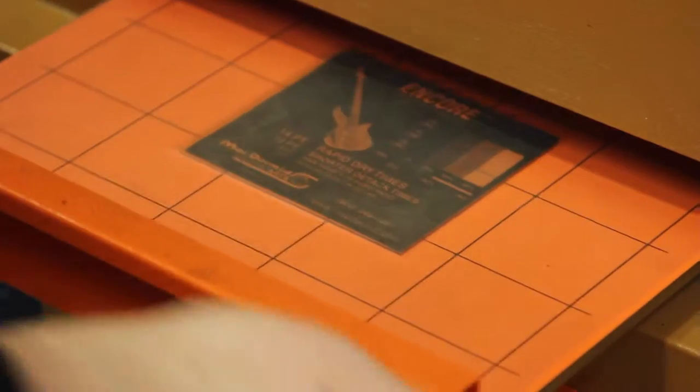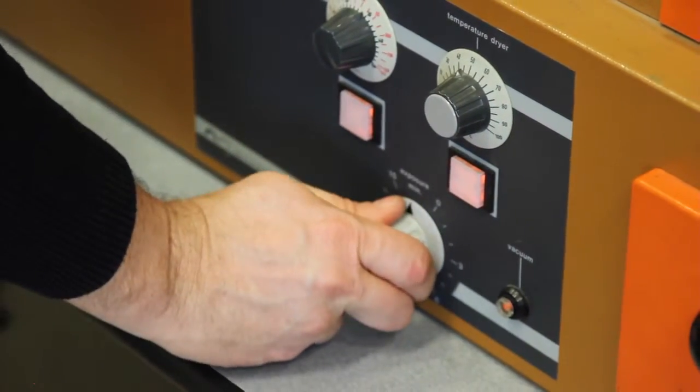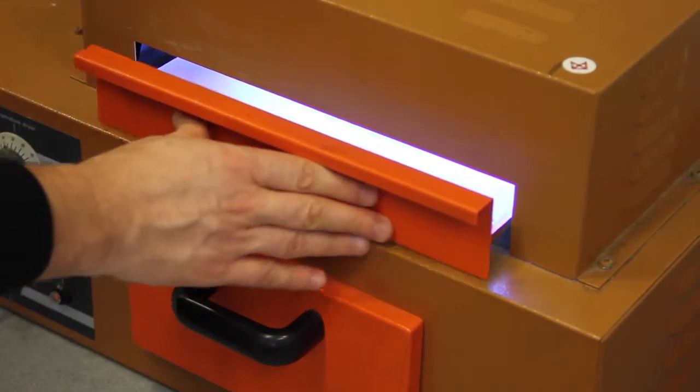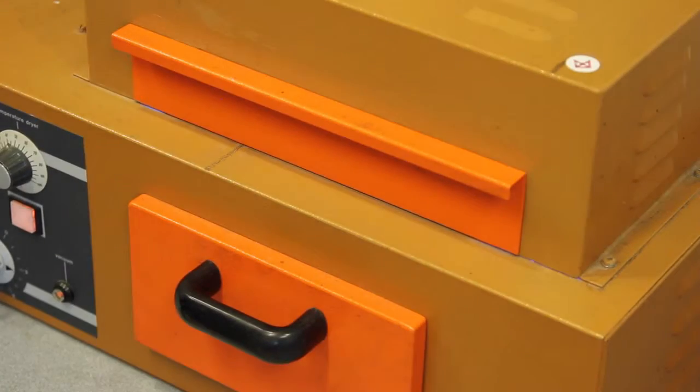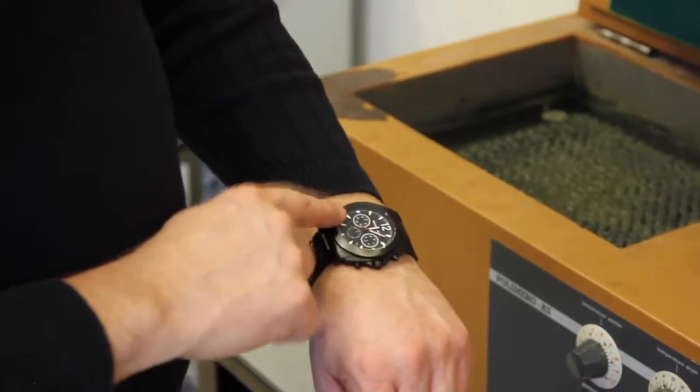So in order to expose it we're going to slide the drawer in and then we have a dial down here which we're going to turn to the right clockwise that will turn the lights on. You can see here we have the UV light now exposing the polymer plate but more importantly what we want to do is measure off with maybe a watch with a second hand three and a half minutes.